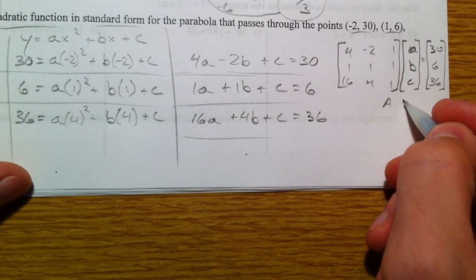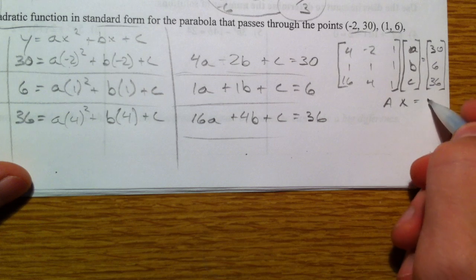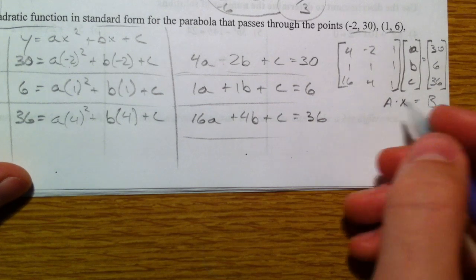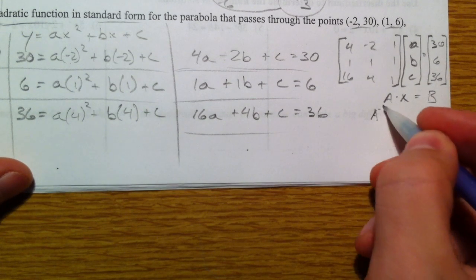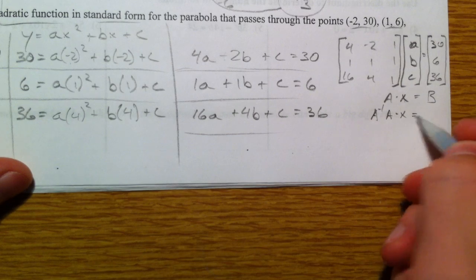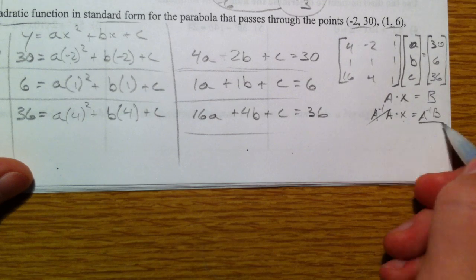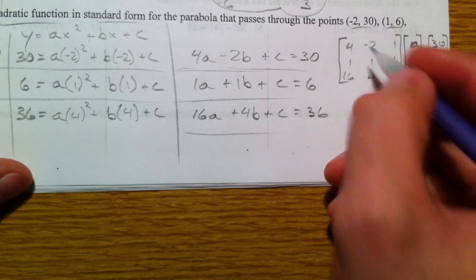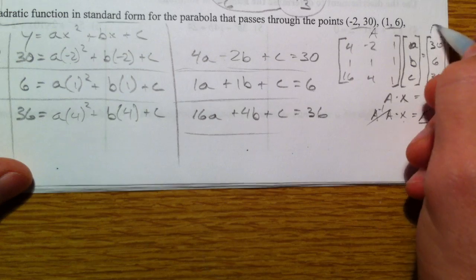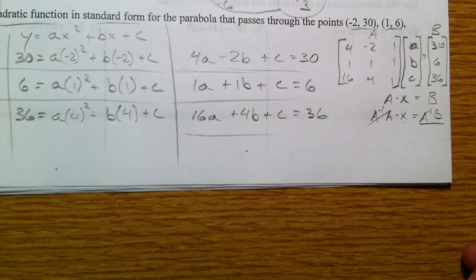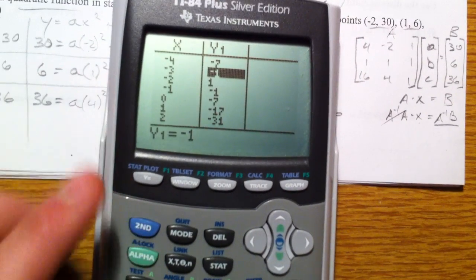So this is some matrix A times some matrix x equals some matrix B. So we said if we multiply by the inverse of the matrix, we'll get this to cancel out, and we'll get x to be just that. So let's make this matrix A and this matrix B, and we'll solve for A, B, and C.